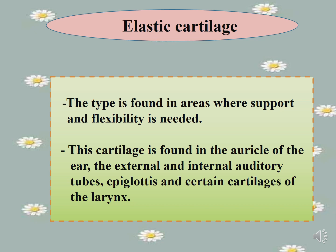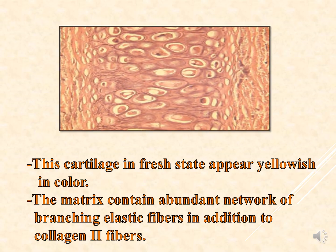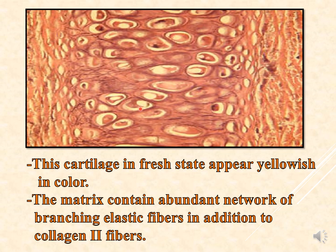Elastic cartilage is found in areas where support and flexibility are needed. Its locations include the auricle of the ear, the external and internal auditory tubes, the epiglottis, and certain cartilages of the larynx. In a fresh state, it appears yellow in color. The matrix contains an abundant network of branching elastic fibers in addition to collagen type 2 fibers.